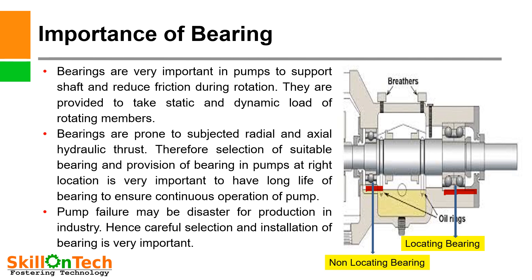Bearings are provided to take static and dynamic load of rotating members. They are prone to radial and axial hydraulic thrust because of process fluid. Therefore, selection of a suitable bearing and provision of bearing in the pump at the right location is very important to ensure long life of the bearing and continuous operation of the pump. Pump failure may be disastrous for production, as process pumps are the heart of the plant. Hence, careful selection and installation of bearings is very important.